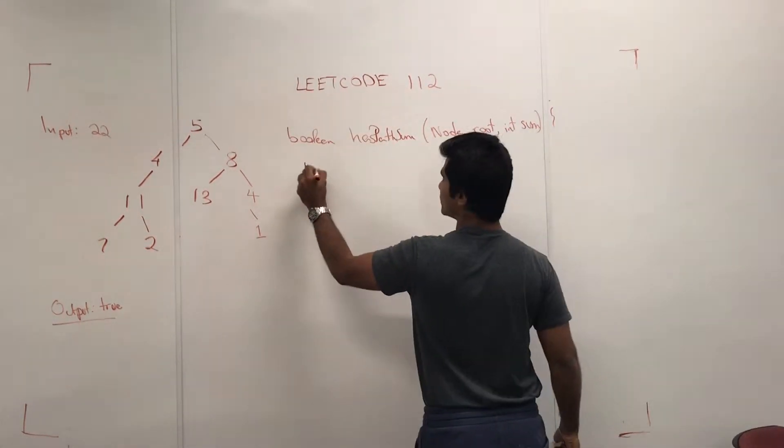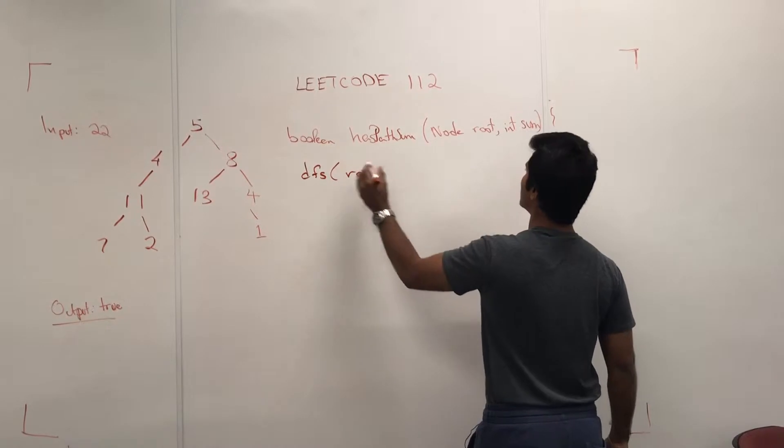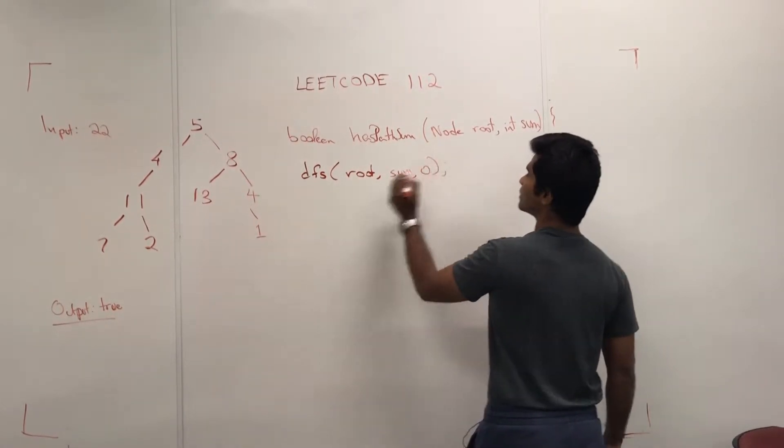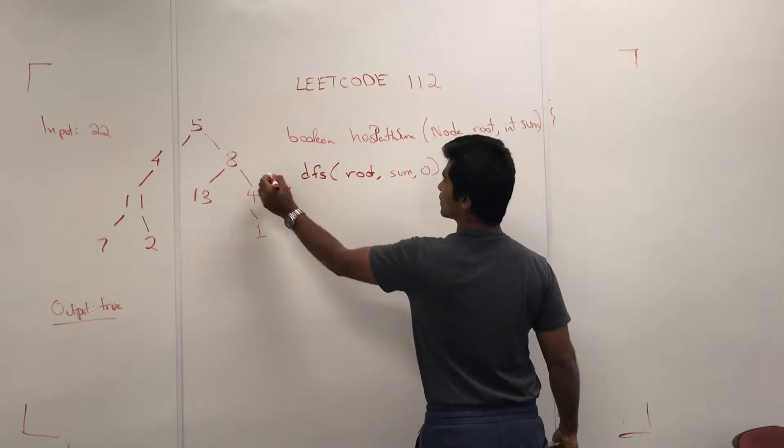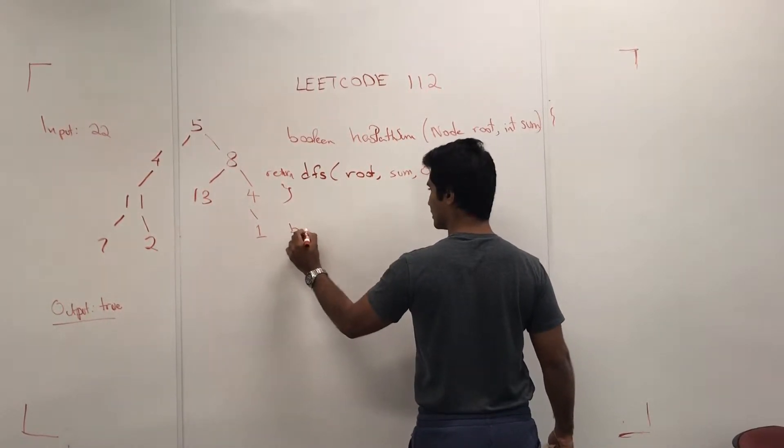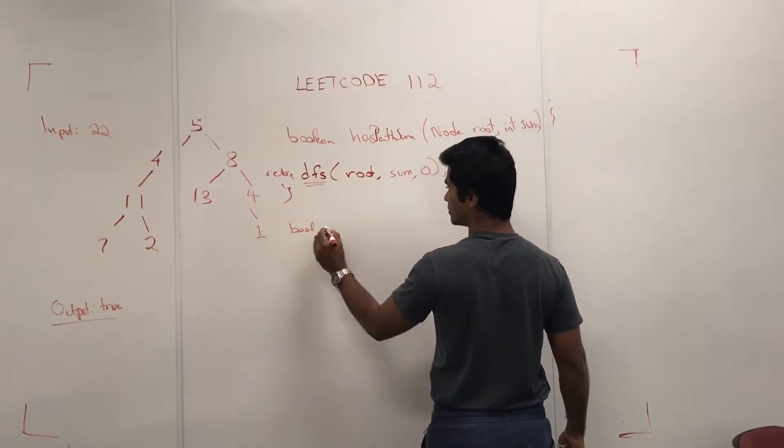So first we do DFS root, and then sum, and then 0, and then we're going to return this. Now this is going to be Boolean, this is a helper function, Boolean DFS.